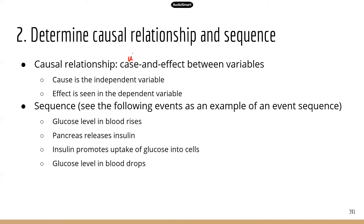Let's go back to the smoking and high blood pressure example. The cause would be smoking, and the effect would be high blood pressure. Blood pressure is the dependent variable — something that you measure. You're going to have a group of nonsmokers and a group of smokers, and you're going to measure their blood pressure.